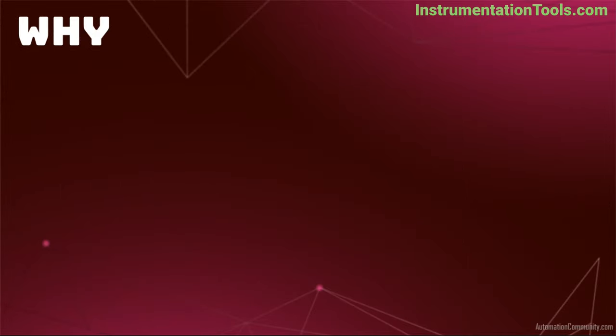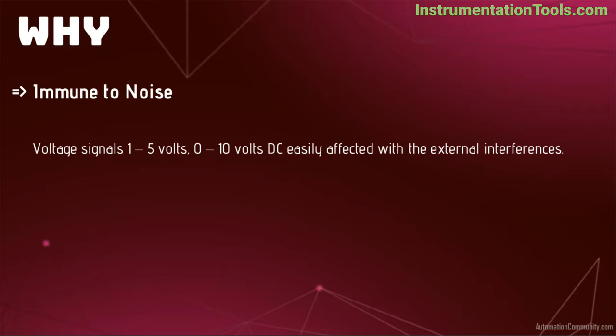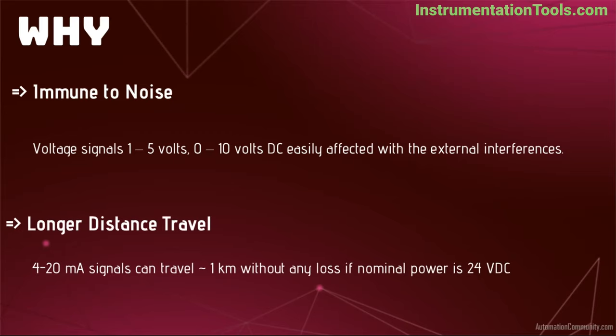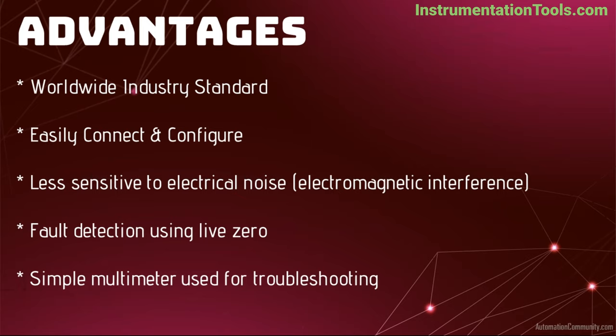Current signals are more immune to electrical noise compared to voltage signals, so the amount of noise or external interference is less. Another advantage is that current signals can travel longer distances — 4 to 20 mA signals can travel approximately 1 km when the nominal power supply is 24 volts DC. The 4 to 20 mA standard makes installation and configuration easy, external disturbances are very less, faults can be easily detected with LIVE ZERO, and a simple multimeter is sufficient for troubleshooting.